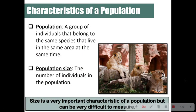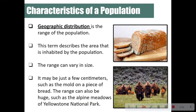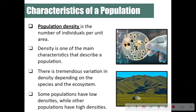Population size is a very important characteristic of a population, but can be very difficult to measure. Geographic distribution is the range of a population — this term describes the area inhabited by that population. The range can vary in size; it may be just a few centimeters, such as the mold on a piece of bread, or the range can be huge, such as the alpine meadows of Yellowstone National Park.